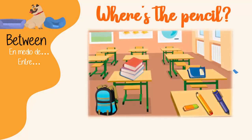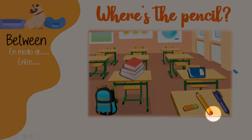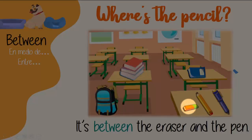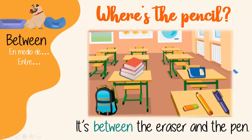The next preposition is BETWEEN. Between se puede traducir como en medio de o entre, pero es importante que siempre mencionemos las dos cosas que están a los lados. Where is the pencil? It's between the eraser and the pen. That's what I mean — we must mention both. And since it's singular, here I use 'it's' and not 'there.'